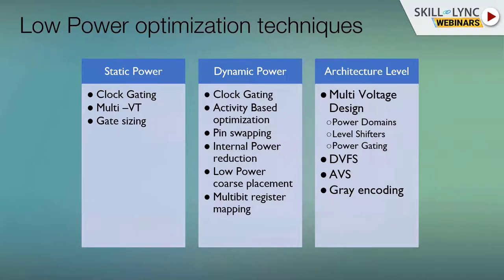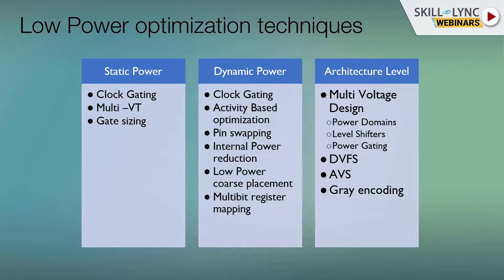For reducing static power, one way is to gate the clock: if sequential elements are not toggling, those gates are never on and power is reduced. Clock gating is one of the most important and critical topics, not only for power but also for timing. Another technique is multi-threshold voltage design using libraries supported by the foundry PDK. Gate sizing in terms of drive strength can also help. The synthesis tool looks at these techniques when performing leakage power optimization.